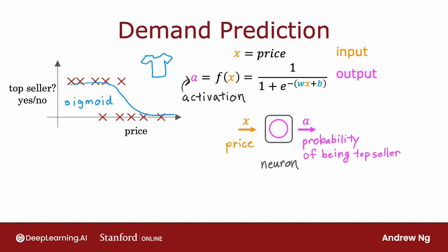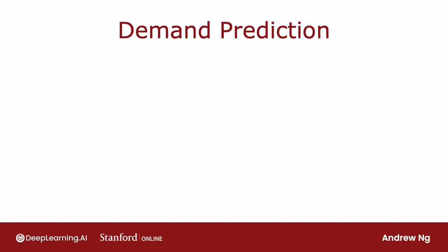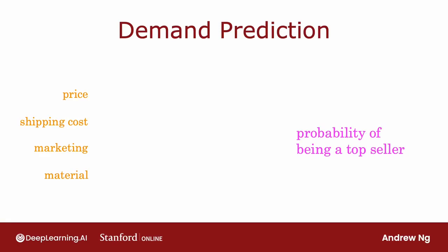Given this description of a single neuron, building a neural network now just requires taking a bunch of these neurons and wiring them together. Let's now look at a more complex example of demand prediction. In this example, we're going to have four features to predict whether or not a t-shirt is a top seller: the price of the t-shirt, the shipping costs, the amount of marketing of that particular t-shirt, as well as the material quality. You might suspect that whether or not a t-shirt becomes a top seller depends on affordability, degree of awareness, and perceived quality.